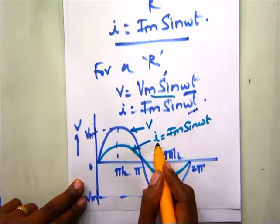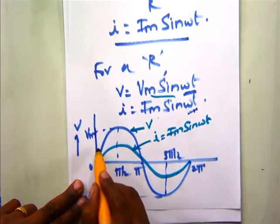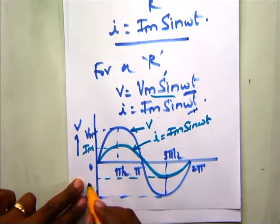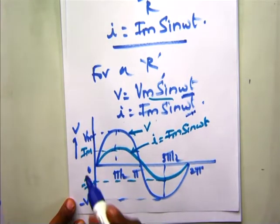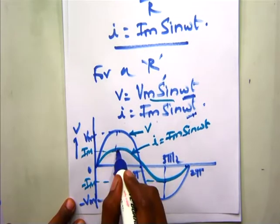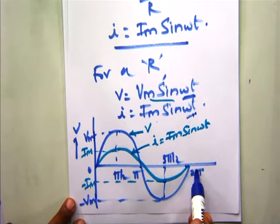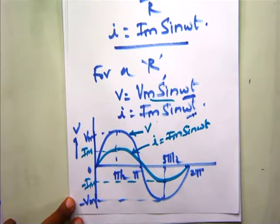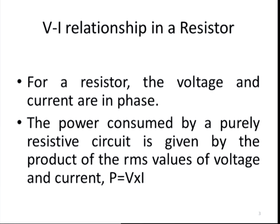As you can see, the current value is also equal to 0 at omega t equal to 0, pi, and 2 pi. For omega t equal to pi by 2, the current waveform has a peak value Im, and for omega t equal to 3 pi by 2, it has a peak value equal to minus Im. From both these waveforms, it can be seen that for a resistor, both the voltage and current waveforms attain their 0 values as well as their peak values at the same time. For a resistor, the voltage and current are in phase.